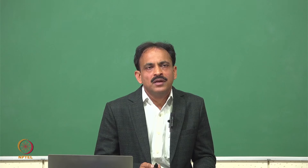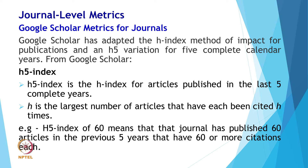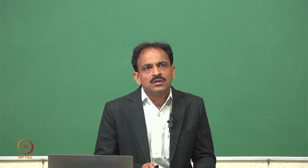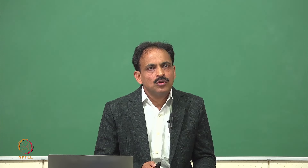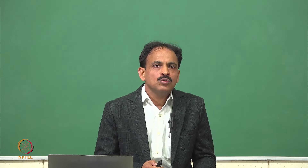The H5 index is another metric from Google Scholar. H5 index is the H index of articles published in the last five complete years. A publication that had 5 articles but only 3 had at least 5 citations or more would have an H5 of 3. For example, an H5 of 60 means the journal has published 60 articles in the previous five years that each have 60 or more citations. The limitation of Google Scholar metrics is that they display only the top 20 journals for each subject category, and there is no historical data available.